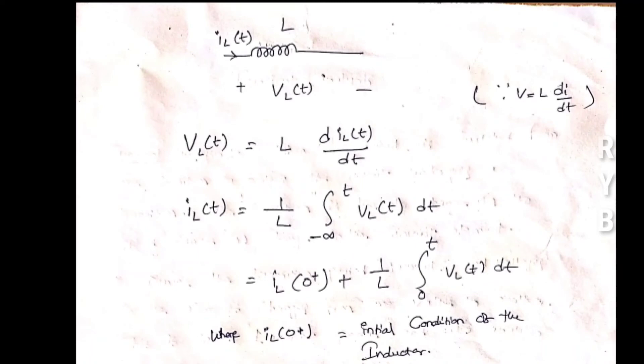Before connecting the inductor in the circuit, some energy may already be stored. That means at time 0 minus — before connecting — the past is 0 minus, the present is 0, and the future is 0 plus. For example, 0.5, 0.1 seconds and so on. Here we consider: past is 0 minus, present is 0, and future is 0 plus.